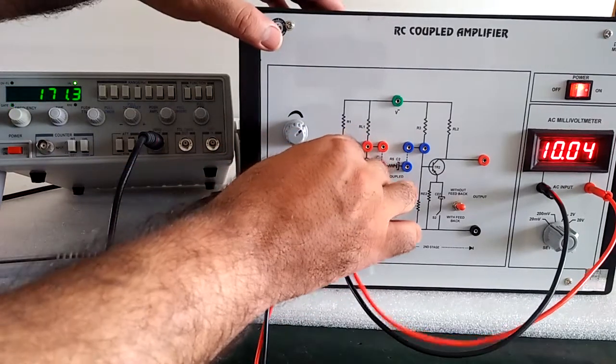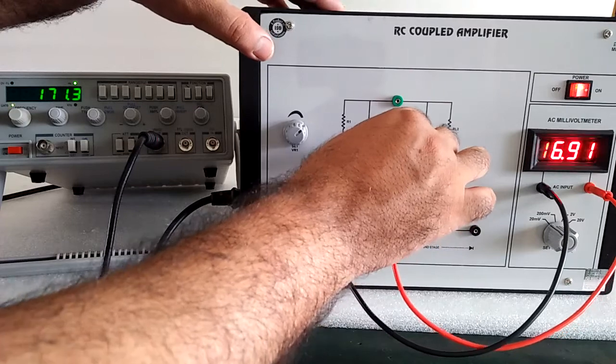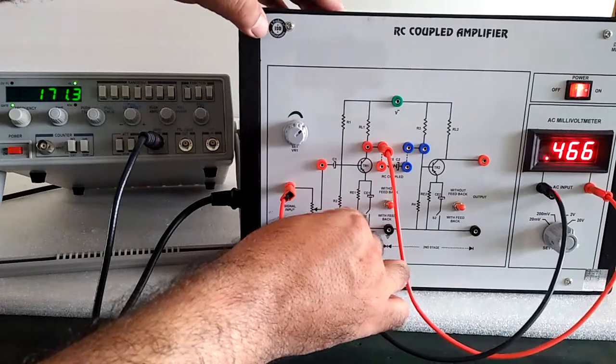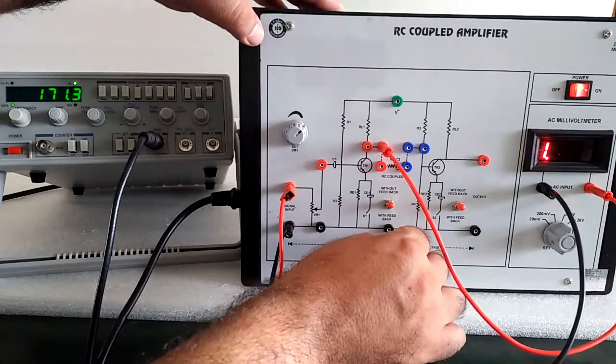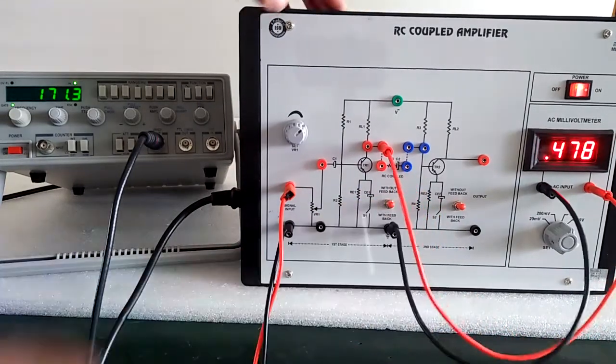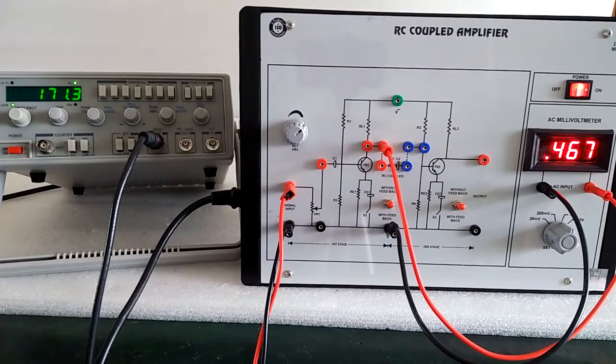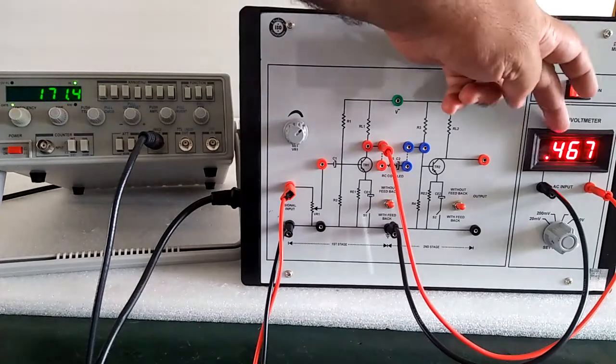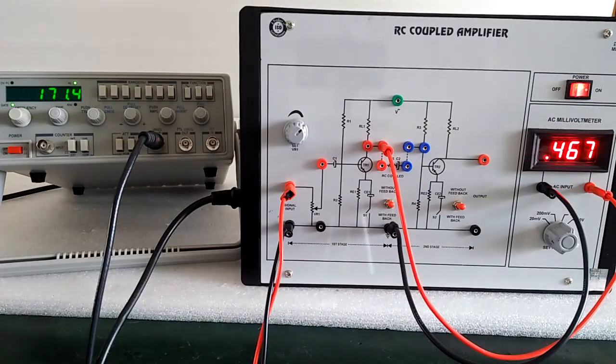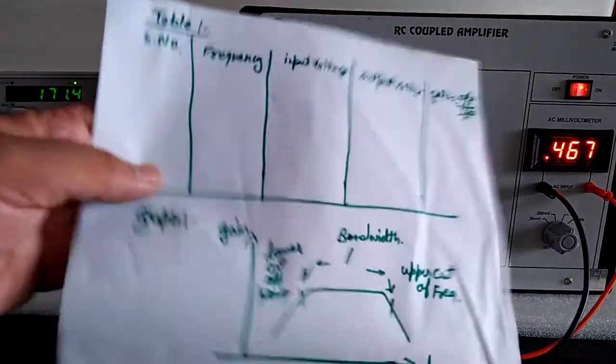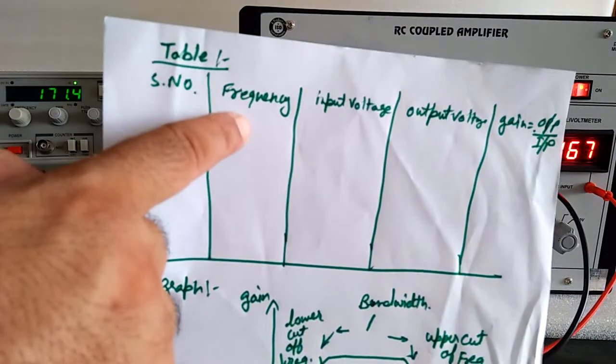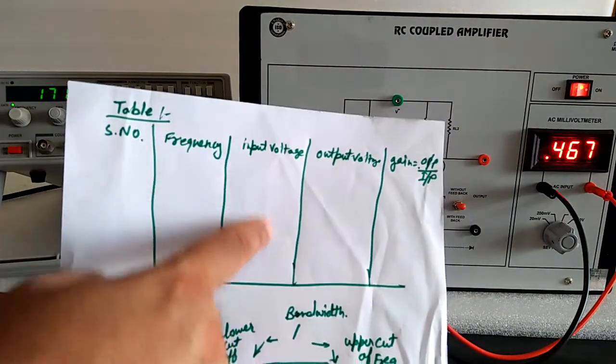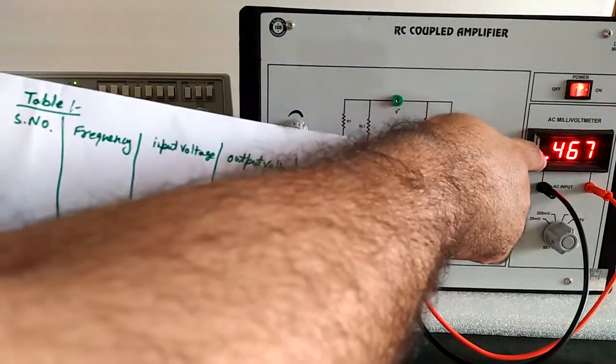To see the output, we have the input voltage and here we get the output voltage. So the table is here, frequency noted from the input voltage and here we have the output voltage here.